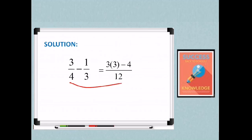The LCD is 12. So 12 divides 4 is 3. Kaya yun yung i-multiply natin sa taas. So 3 times 3 minus 12 divides 3. Doon tayo sa 1/3 is 4 times 1 is 4. Then simplify. 3 times 3 is 9 minus 4 over 12. Then we just subtract the numerators. 9 minus 4 is 5 over 12.